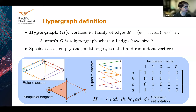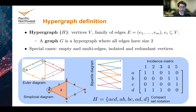We have some special cases: empty edges (perhaps a group where everybody left), multi-edges (multiple edges with the same membership), isolated vertices (vertices not in any hyperedge), and redundant vertices — two vertices in exactly the same set of hyperedges, which does not happen in a simple graph. These are special cases you have to treat when thinking about hypergraphs.